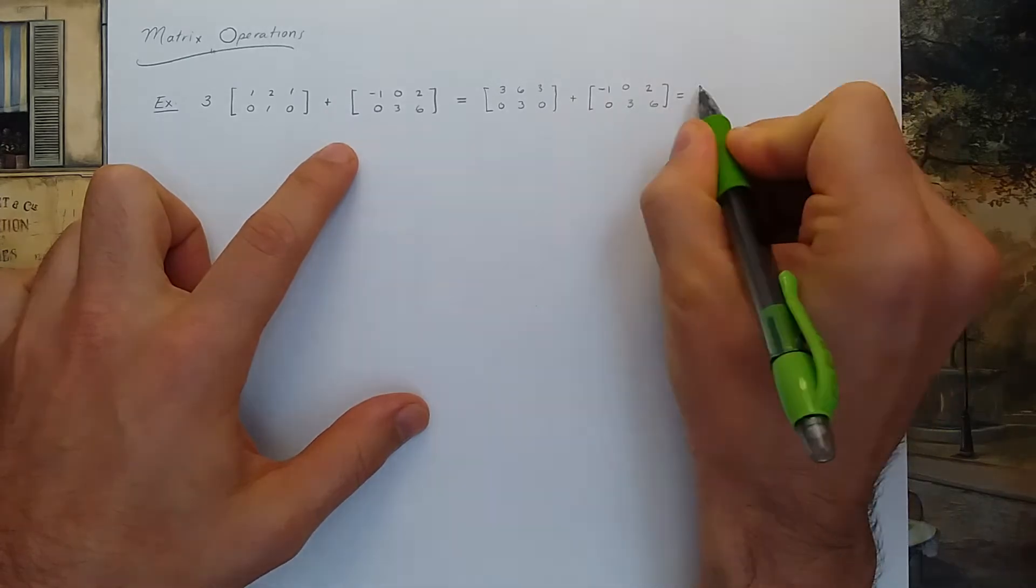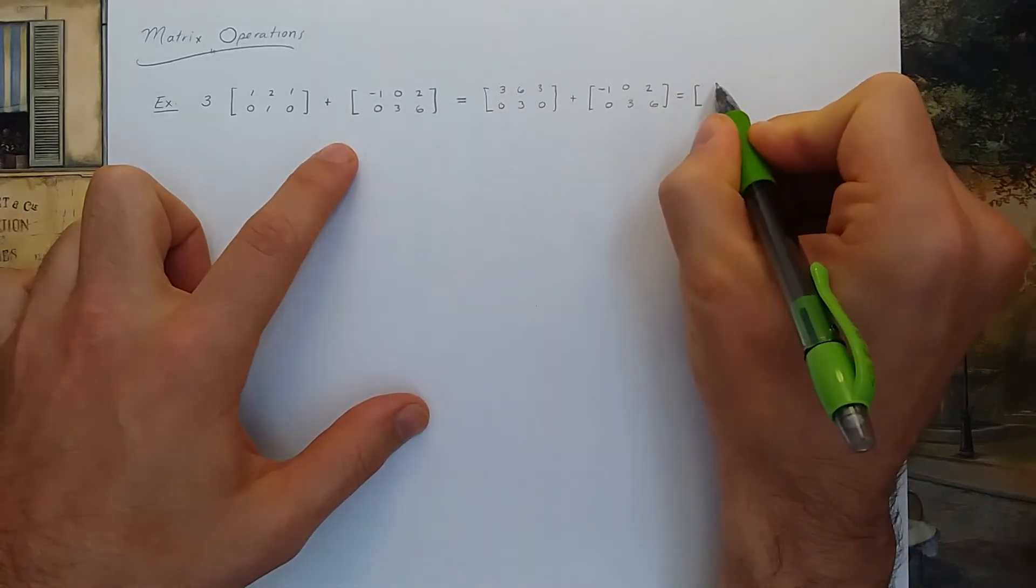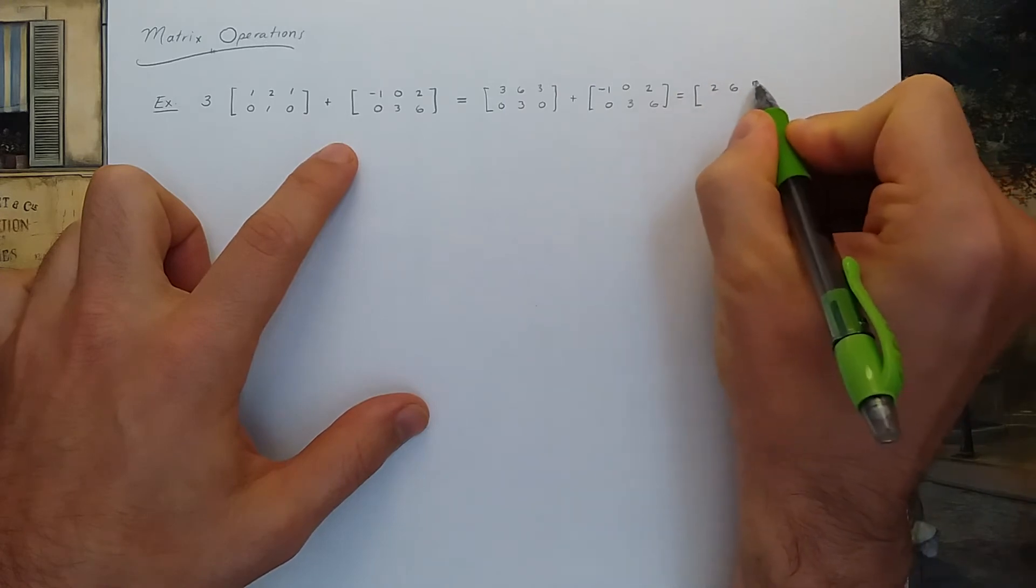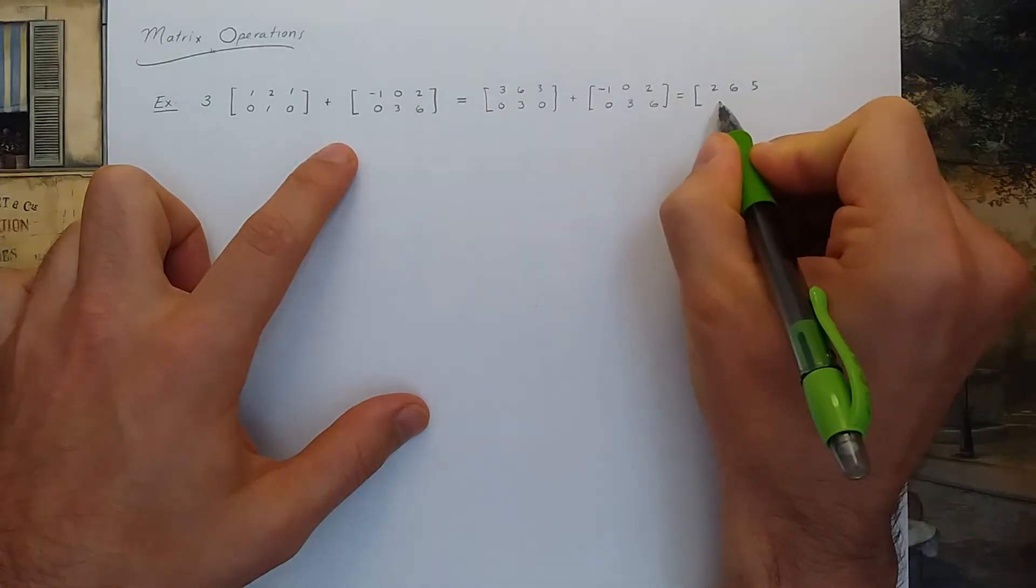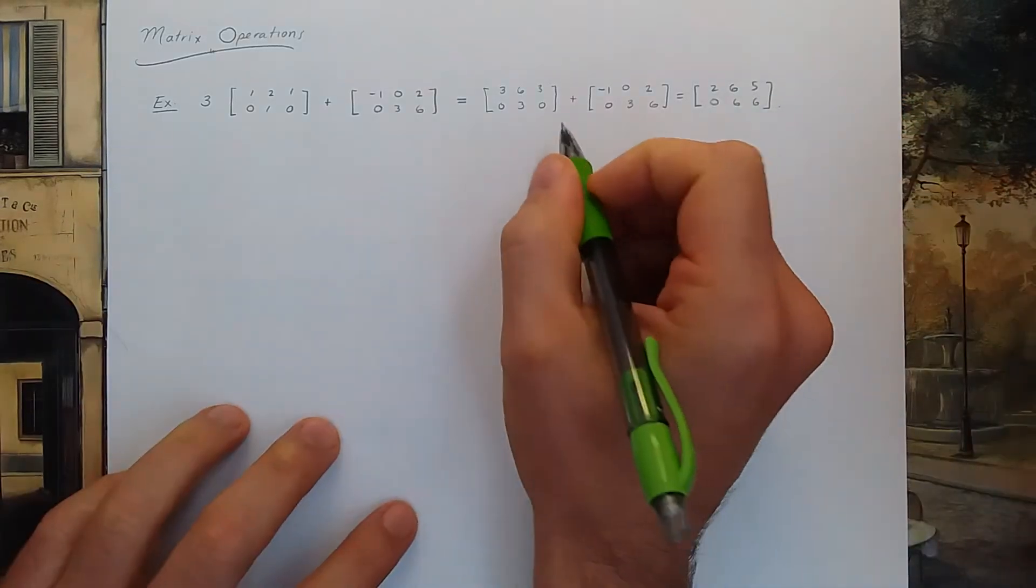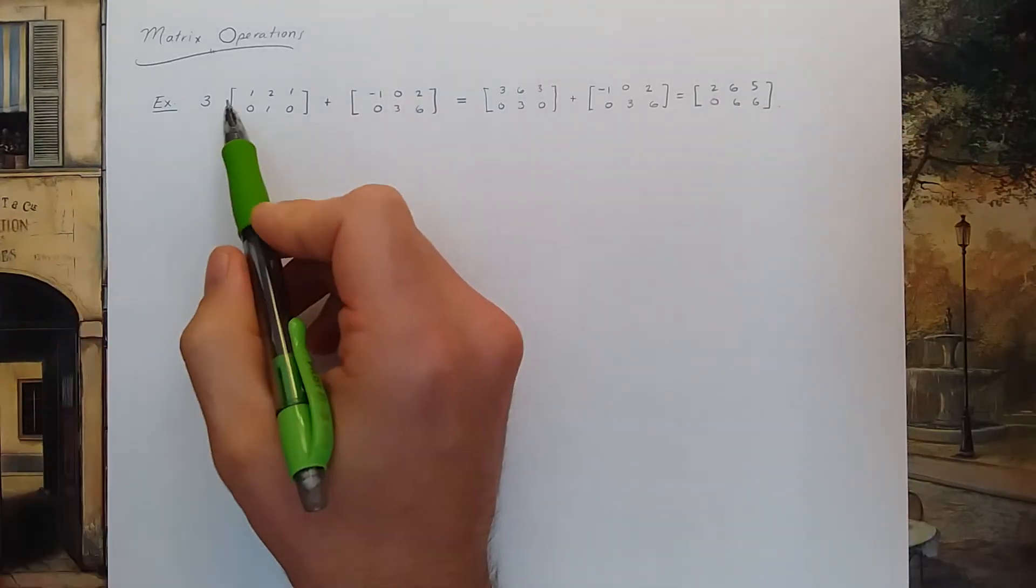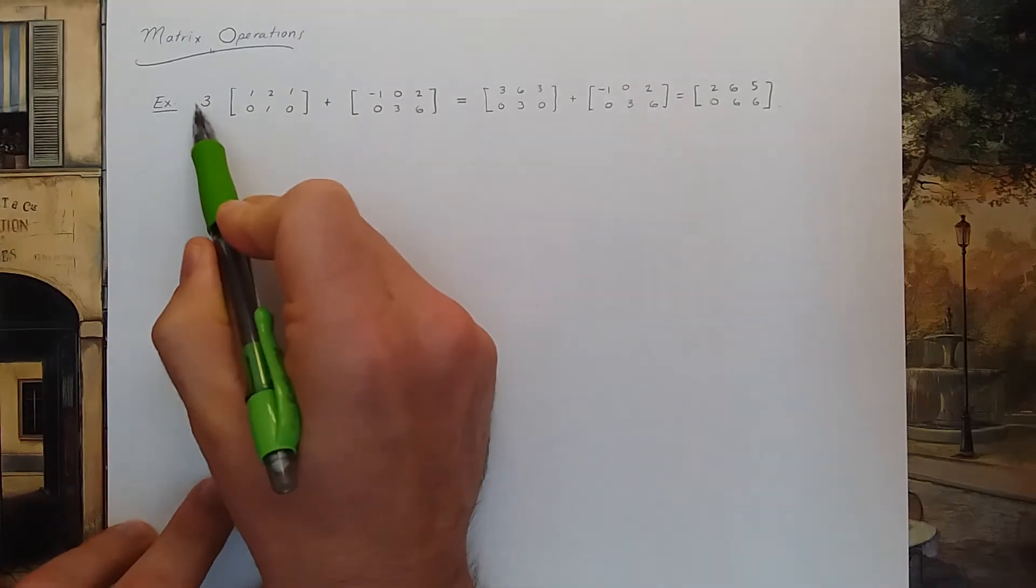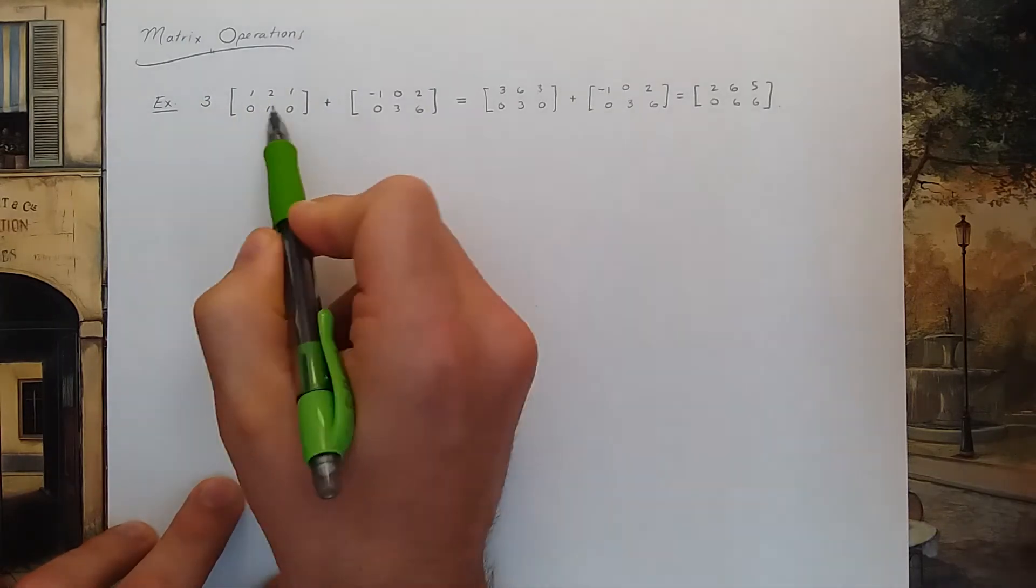And I believe you will get 2, 6, 5, 0, 6, 6. So that's all there is to matrix addition and you can multiply a matrix by a constant as well.